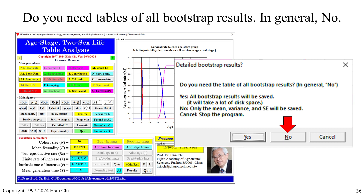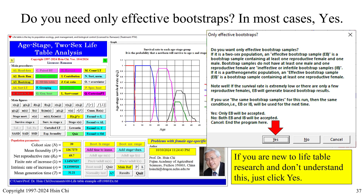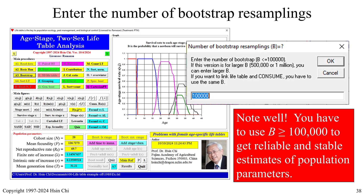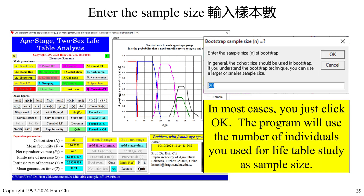If you press Cancel, the program will stop. When asked if you need only effective bootstraps, if you are new to life table research just click Yes. Then enter the number of bootstrap resamplings B — note that you must use a large B to get reliable and stable estimates. Enter the sample size; in most cases just click OK, and the program will use the number of individuals from your life table study.